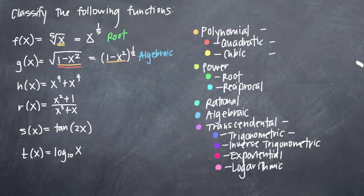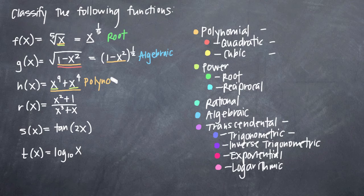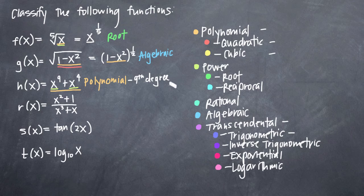For our third function, h of x, you can see that we have individual power functions. x to the ninth is a power function and x to the fourth is a power function. But when we add them together, they become a polynomial function. x to the ninth plus x to the fourth will be a polynomial function because our exponents here are non-negative integers. However, if we really want to be thorough, we should go ahead and call this a ninth-degree polynomial because the largest exponent is nine, which makes this a ninth-degree polynomial.